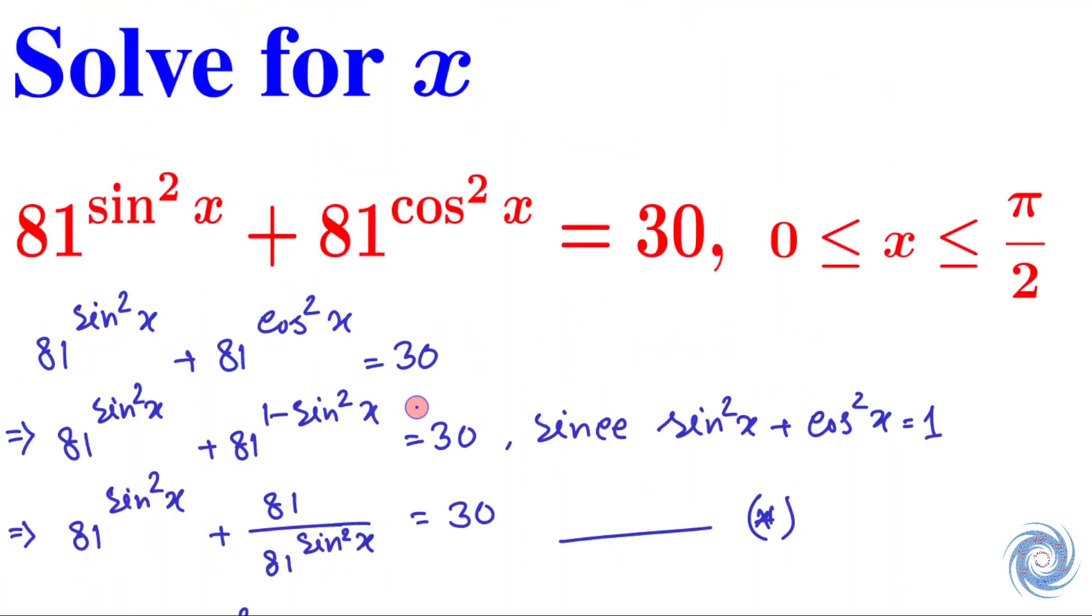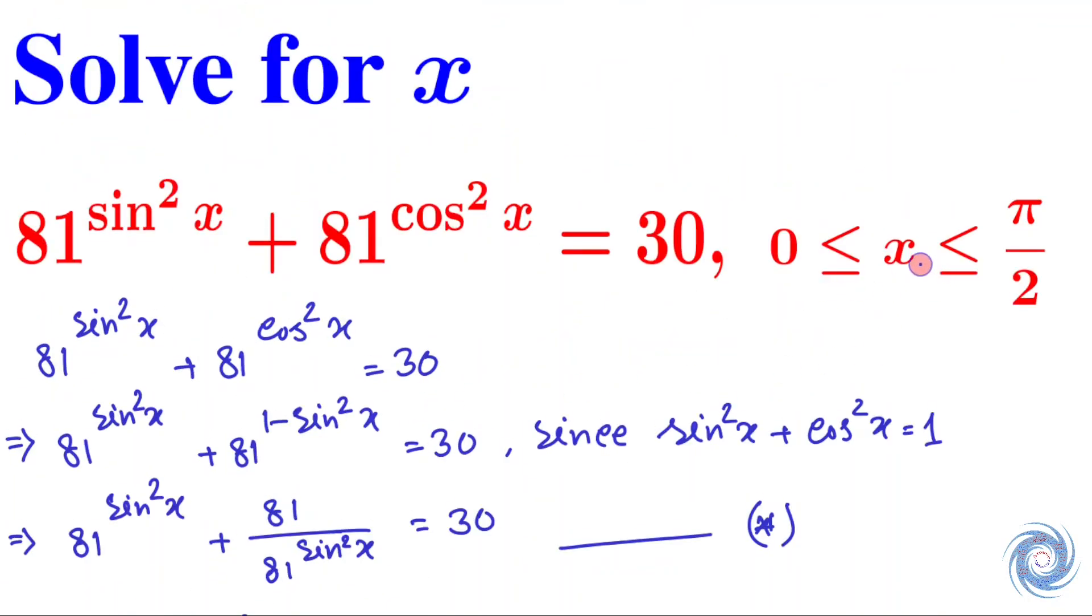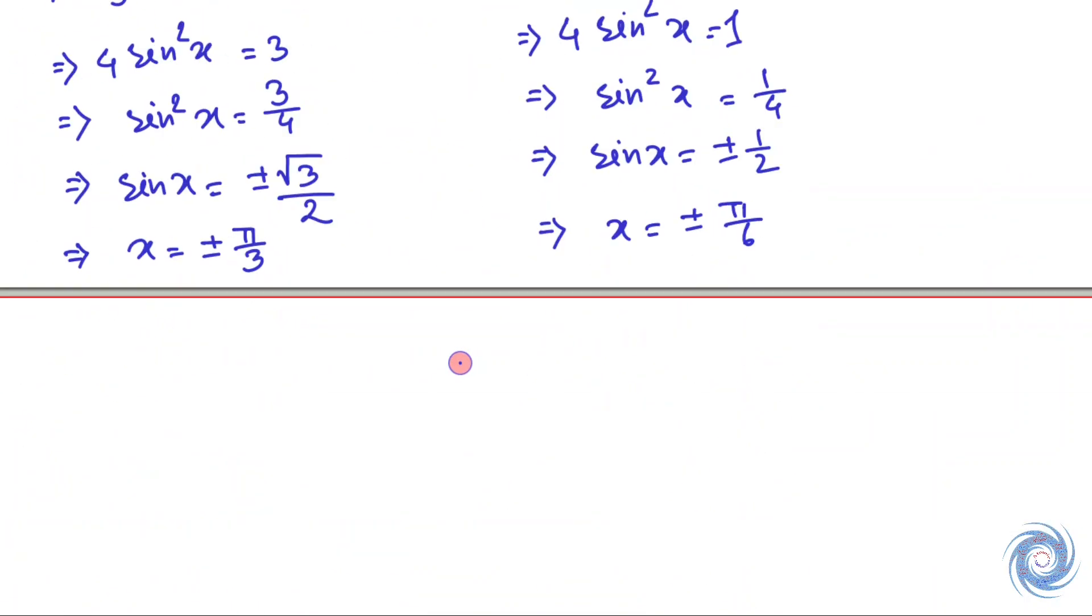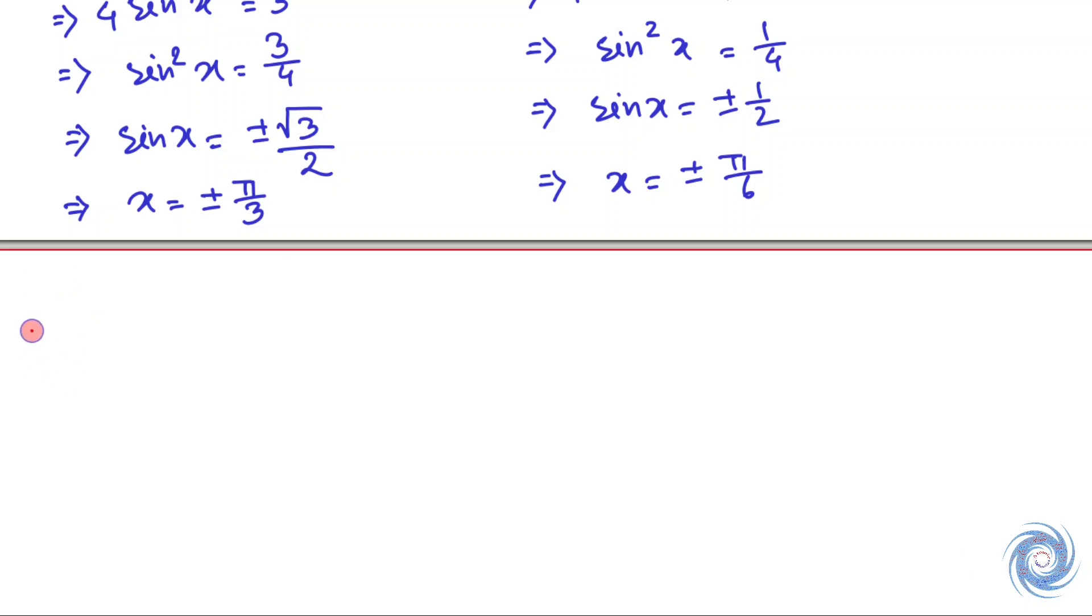But in the question it is given that x lies in the closed interval 0 to π/2, so here we have two solutions: x = π/3 and x = π/6.